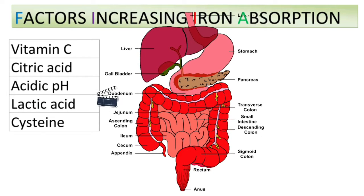Factors increasing iron absorption: vitamin C, citric acid, acidic pH, lactic acid, and cysteine. These are the factors that increase iron absorption.